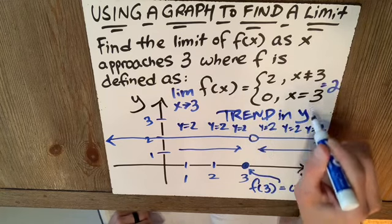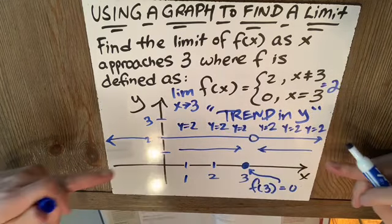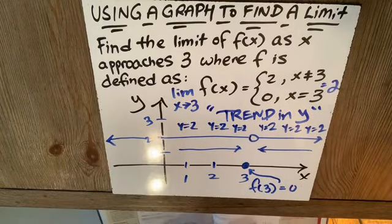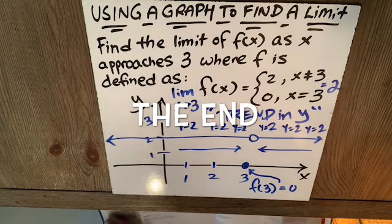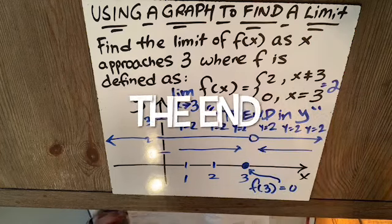The trend in y, that's the limit. The trend here is that y should be going to two. It's down here. Does not matter. The trend remains that the limit is two, because that's the trend in y.